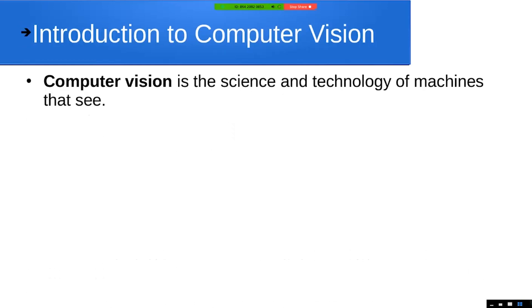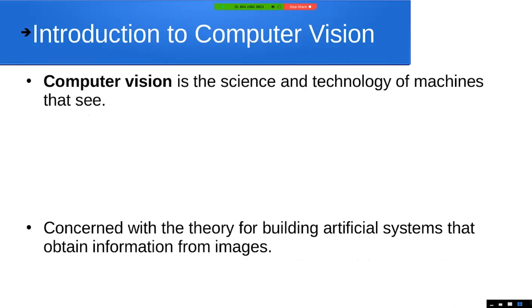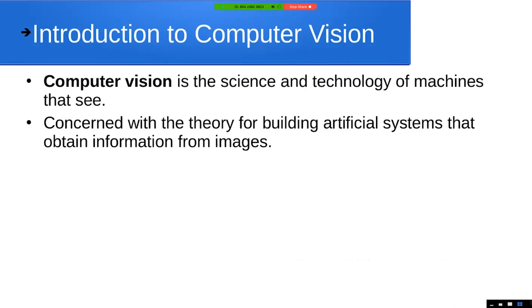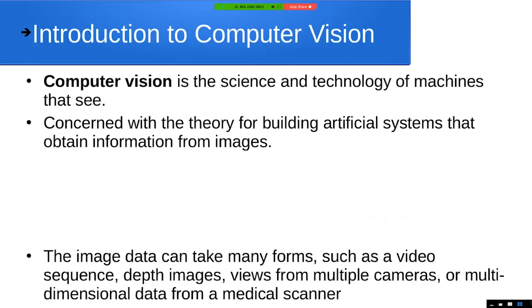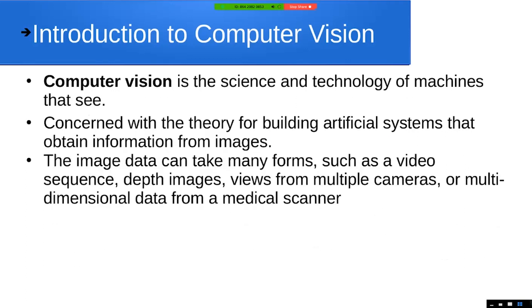What is computer vision? It's basically the science and technology of machines that see. It's building systems that obtain information from images, and the image data can take many forms: video sequences, depth images from depth sensors, multiple cameras, multi-dimensional medical scanners.